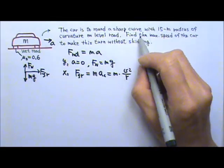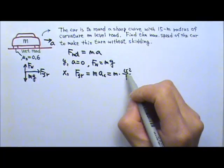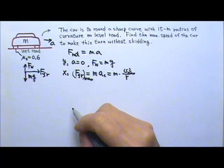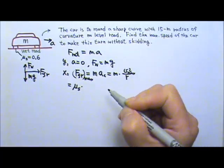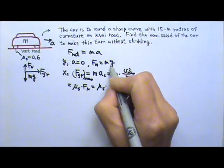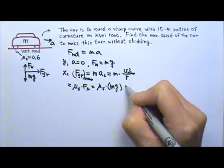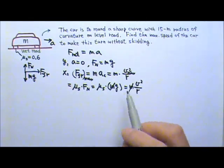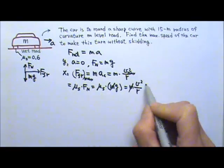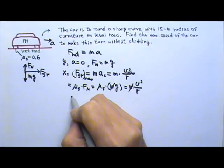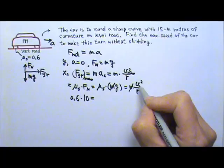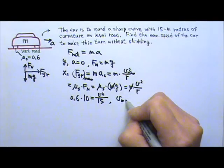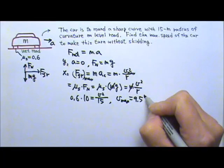If the car is moving at the maximum speed, that means we are using the maximum friction — the maximum possible friction, which is μs times the normal force. The normal force is Mg, so substituting: μs × Mg = M × v²/R. The mass M cancels, so the mass of the car does not matter. Solving for speed: μs = 0.6, g = 10, radius = 15 meters. The maximum speed is 9.5 meters per second.